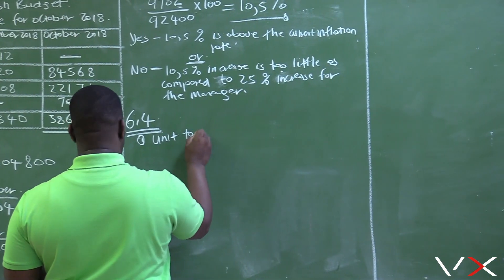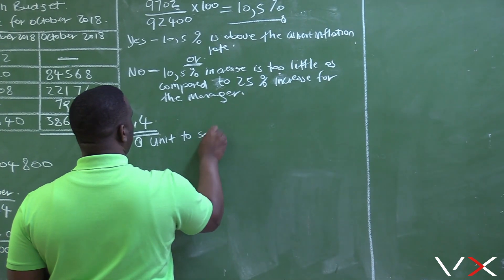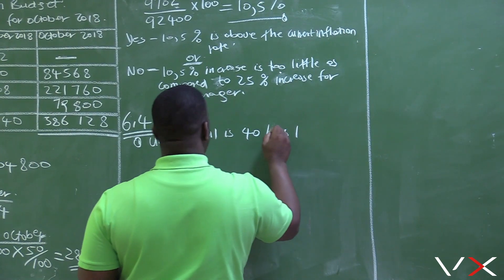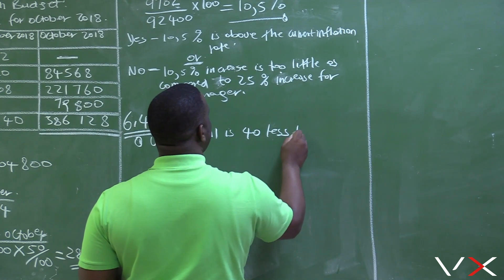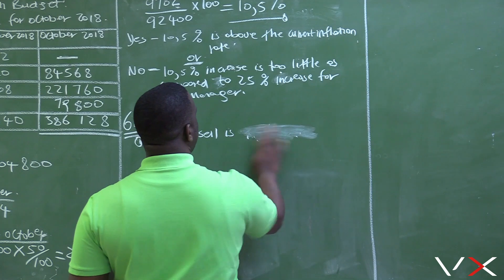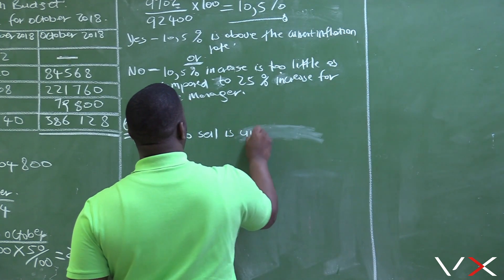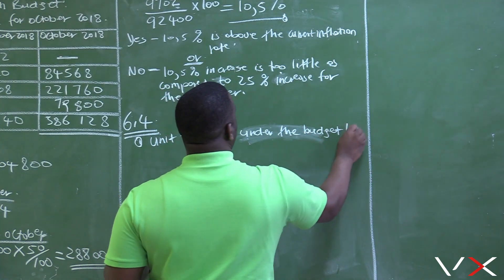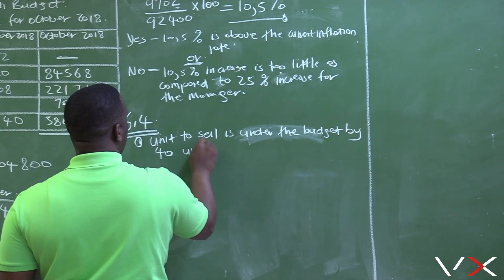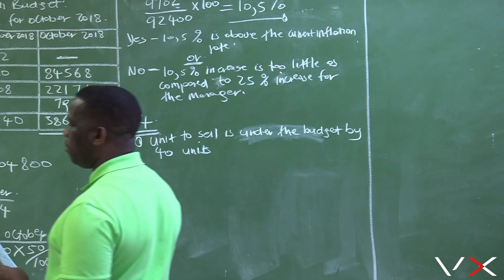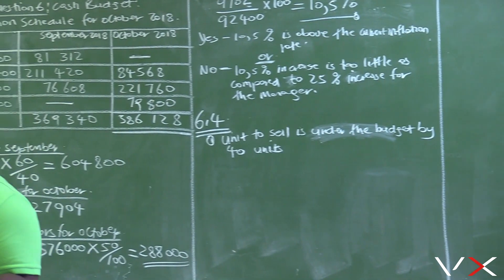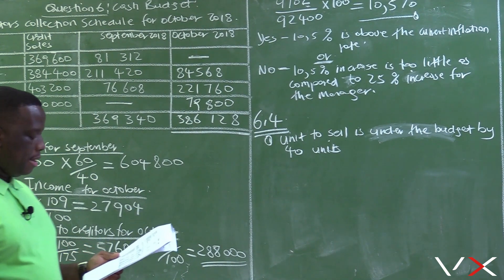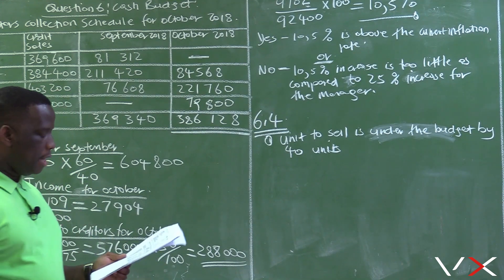Units to sell is 40 less than the budget — under the budget by 40 units. You can see the effects of the new competitor. We had planned to sell 240 units, but because of the new competitor, we managed to sell only 200 actual units. And even the total sales were affected.